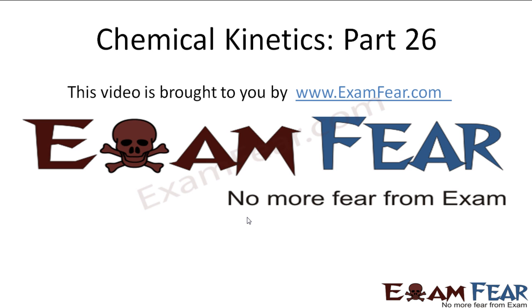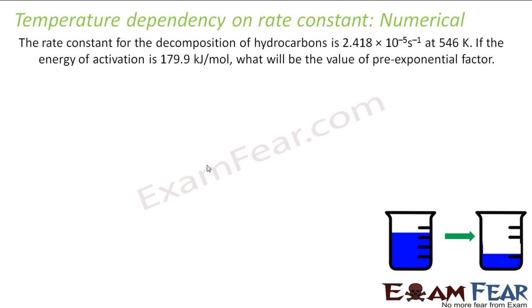Hello friends. This video on chemical kinetics part 26 is brought to you by exampear.com. The question says the rate constant of decomposition of hydrocarbons is given at a given temperature. The energy of activation is also given in kilojoule per mole. Please note the units. We have to find the pre-exponential factor in the Arrhenius equation.